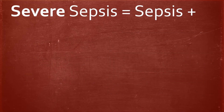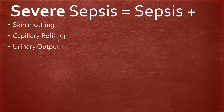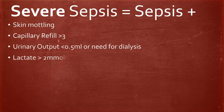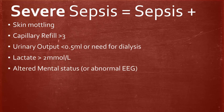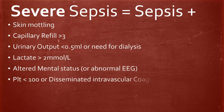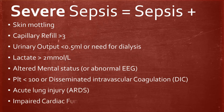In summary, severe sepsis equals sepsis plus one of the following: skin mottling, capillary refill greater than 3, urinary output less than 0.5, lactate greater than 2, altered mental status, platelets less than 100 or DIC, acute lung injury, or impaired cardiac function.